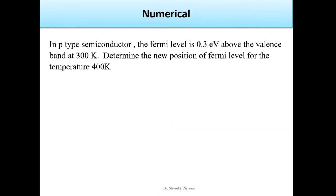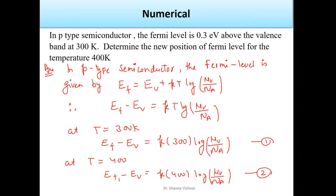For p-type semiconductor, the Fermi level is 0.3 eV above the valence band at 300 Kelvin. The temperature is now changed to 400 Kelvin. Using the p-type semiconductor Fermi level formula: EF = EV + kT · ln(Nv / Na), which gives EF − EV = kT · ln(Nv / Na). Setting up the same ratio approach for the two temperatures.